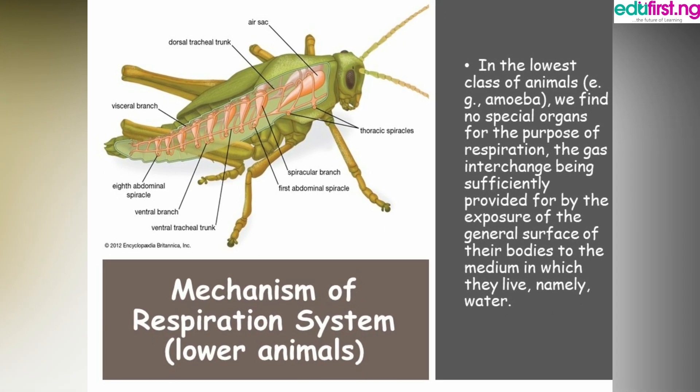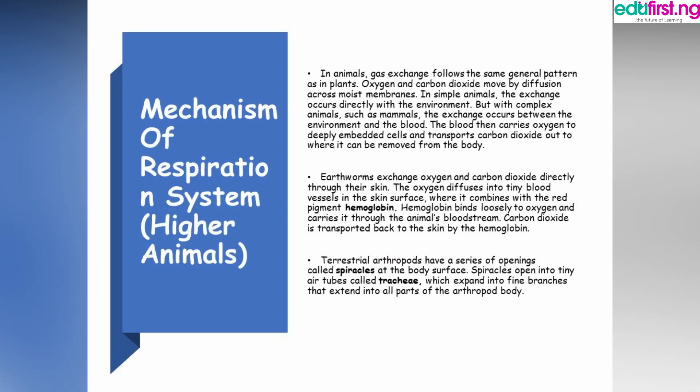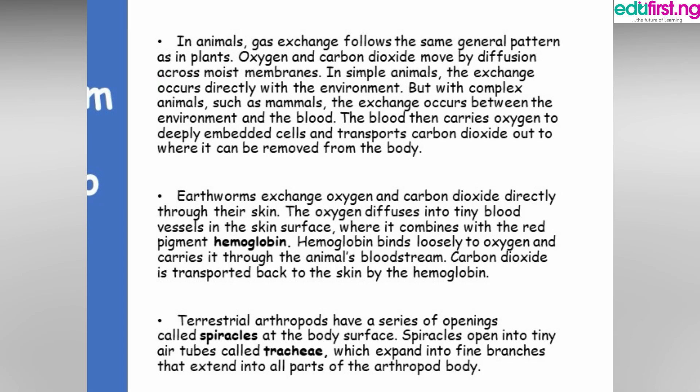In higher animals such as humans, oxygen moves from a lower concentration to a higher concentration — we call this diffusion. Higher animals have developed a respiratory system with lungs. Air rushes into the lungs and then into the air sac where most of the gaseous exchange takes place. There is a combination of air and blood inside the red blood cells.